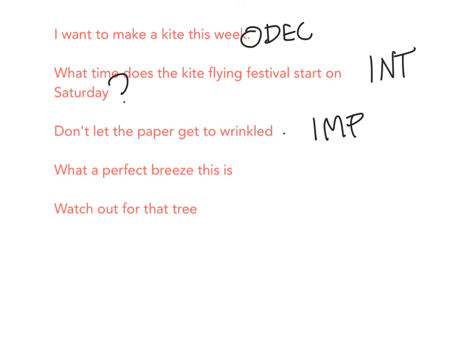'What a perfect breeze this is.' — This is an exclamatory sentence. It shows excitement, so it gets an exclamation point. 'Watch out for that tree.' — This is also imperative because it is a command, and the person sounds like they are really trying to warn somebody, so it gets an exclamation point.